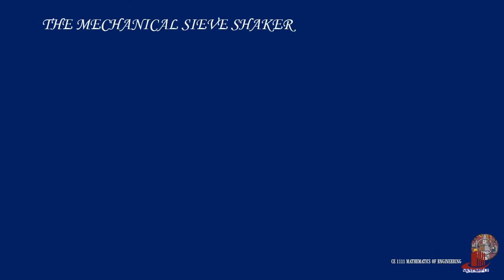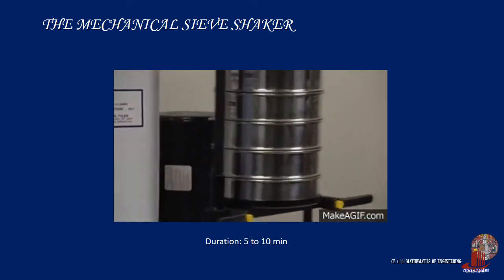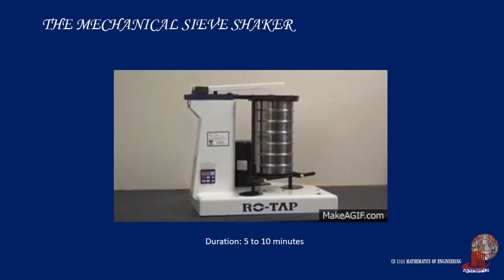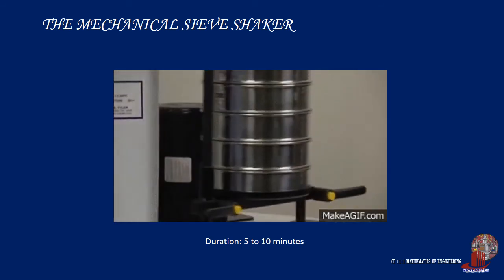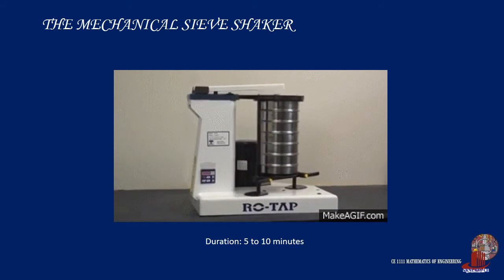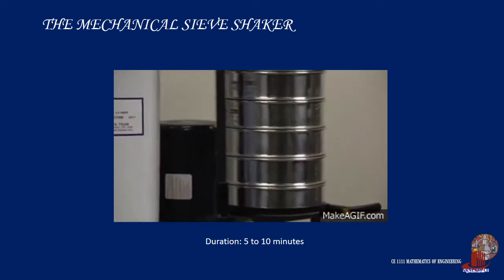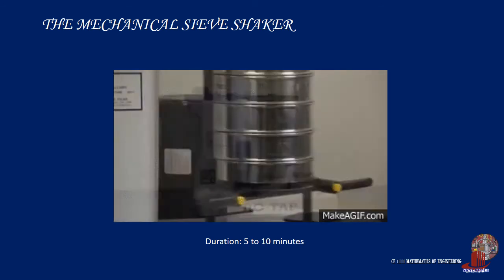Today, manual sieving is only used where no electricity supply is available — for example, for rapid on-site random checking for oversize or undersize — and is only used for orientation purposes. In contrast, sieve analysis in the laboratory and for quality assurance is carried out with sieve shakers. Modern sieve shakers are characterized by the fact that their mechanical parameters, such as sieving time and amplitude or speed, are carried out with exact reproducibility.